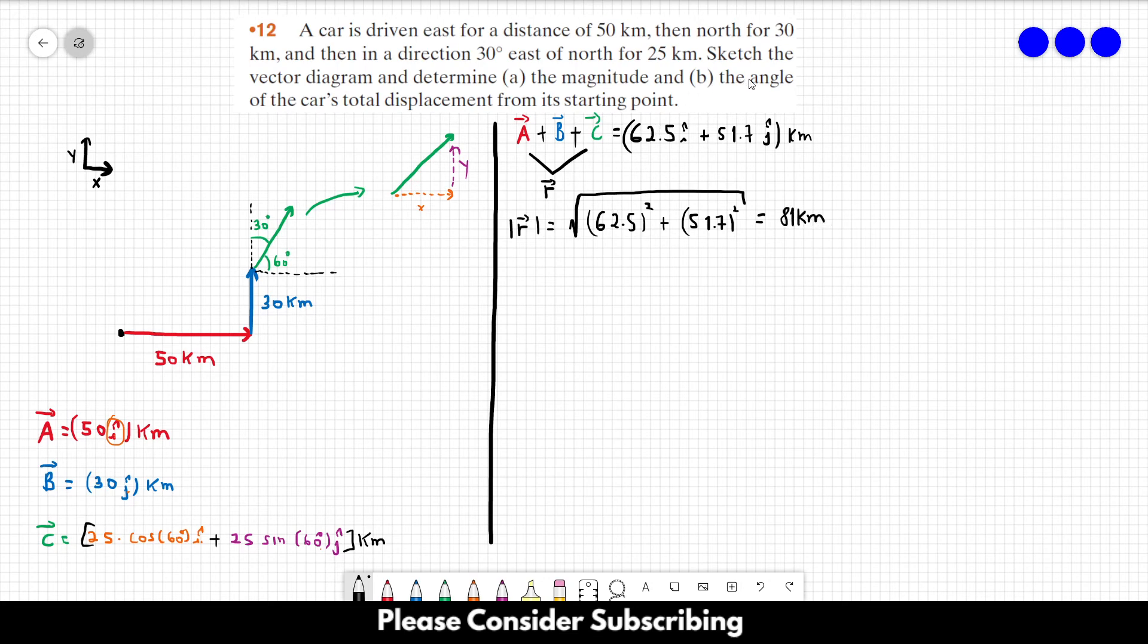Letter B, the angle of the car's total displacement from its starting point. So if you want to know the angle of this vector over here, this is the vector, and we want to find this angle over here. So remember how we can do that.